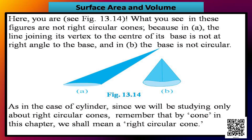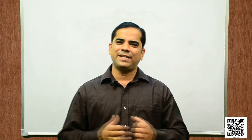Let us see what kind of cone we cannot call a right circular cone. In figure 13.14, these figures are not right circular cones because in figure A the line joining its vertex to the center of its base is not at a right angle to the base, and in figure B the base is not circular. Since we will be studying only about right circular cones, by 'cone' in this chapter we shall mean a right circular cone.